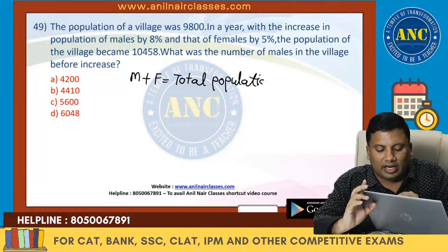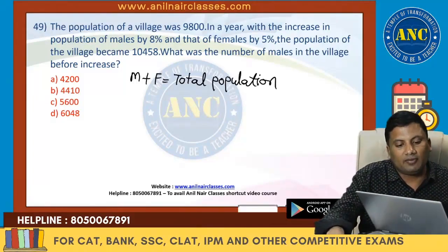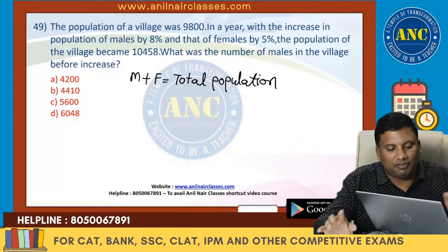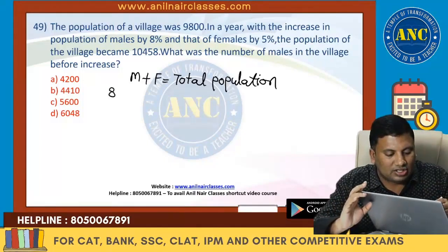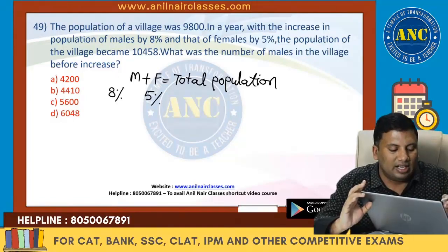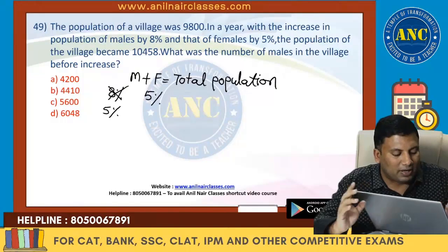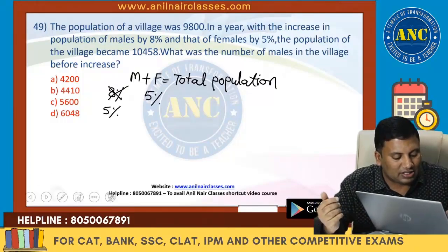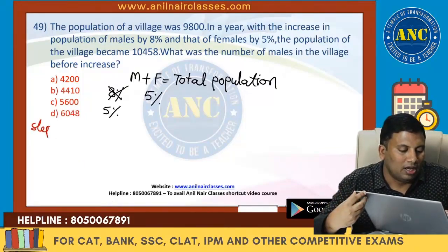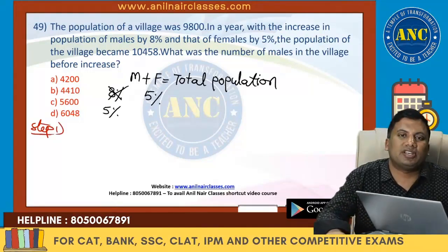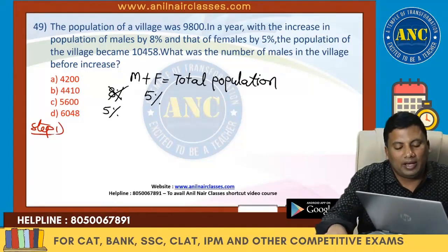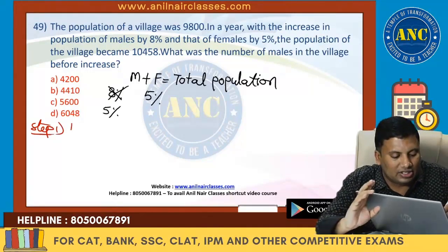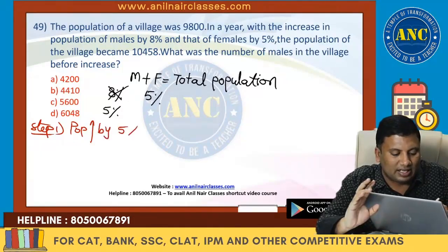In a year, with the increase in number of males by 8% and females by 5%, forget about the 8% — if it is 5%. Step number one: male increases by 5%, females increases by 5%, population also increases by 5%.